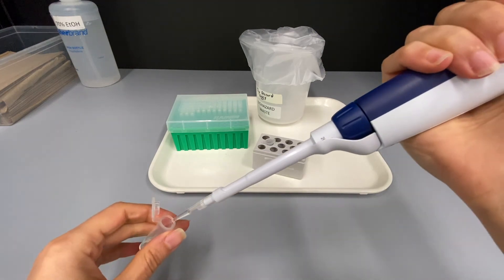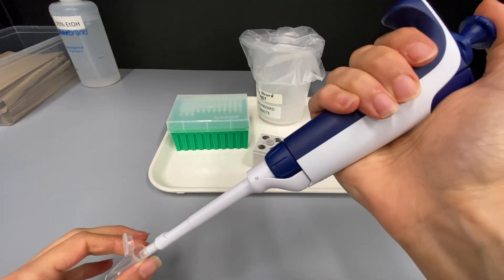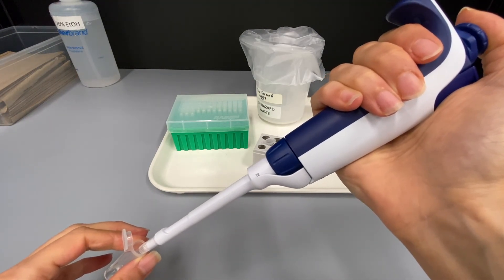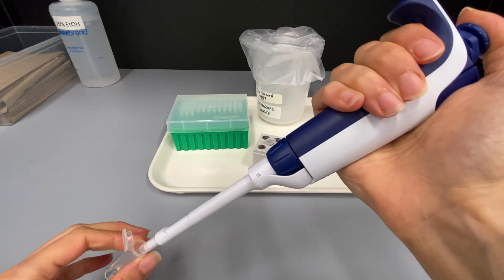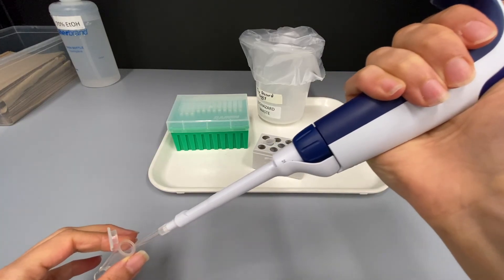Open the next tube, put your tip against the tube wall, then push the plunger down to the first stop, pause for a moment and then go all the way to the second stop to expel any remaining liquid.